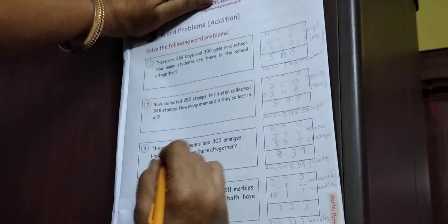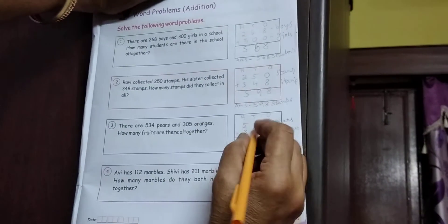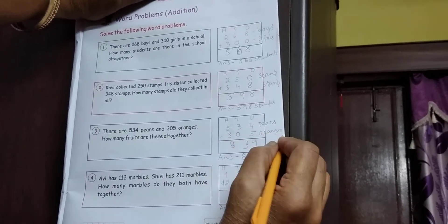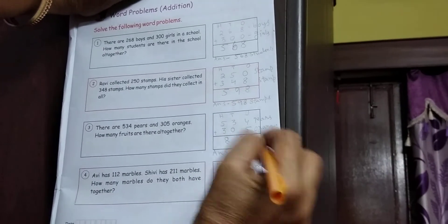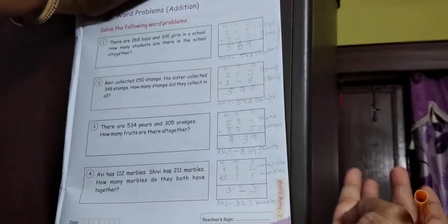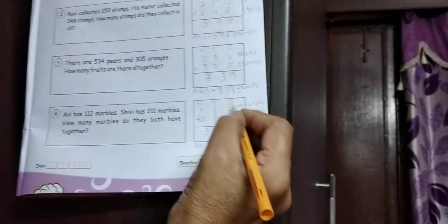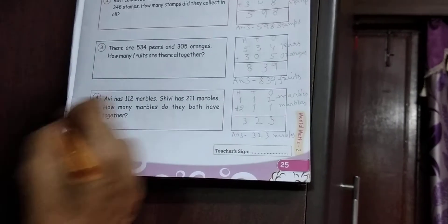Next, there are 534 pears and 305 oranges. How many fruits are there altogether? 534 pears and 305 oranges. Count karo. 5 are 4 mein 9. 6, 7, 8, 9. 3 ka 3. 5 are 3 mein 8. 839 fruits. Answer 839 fruits.